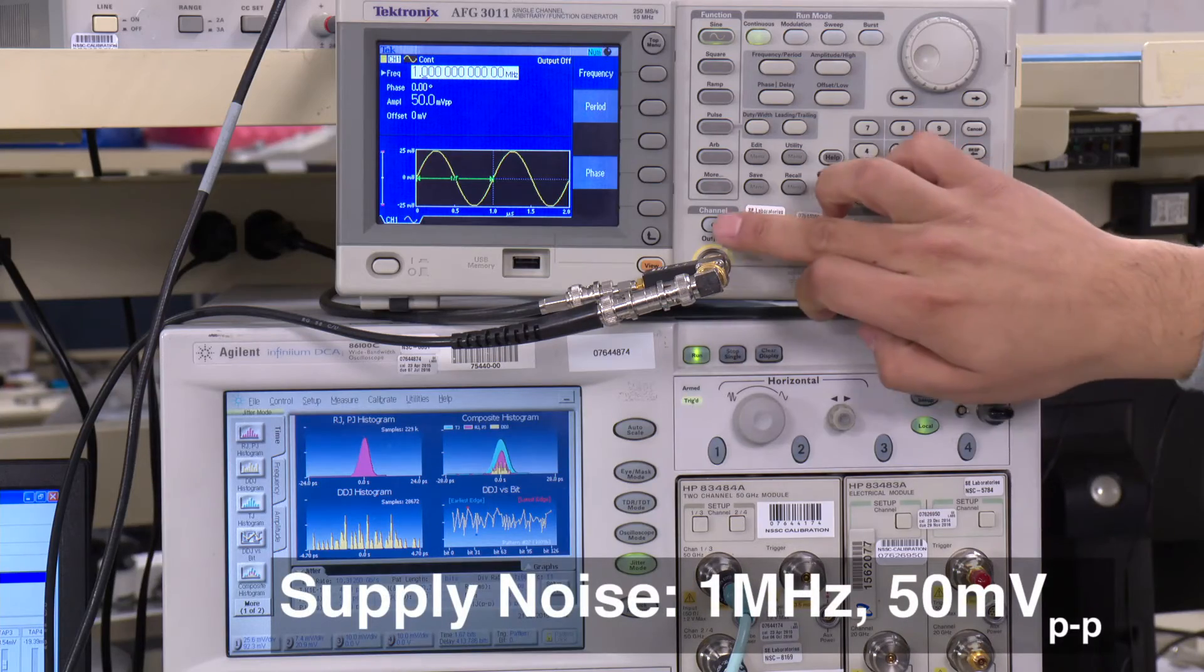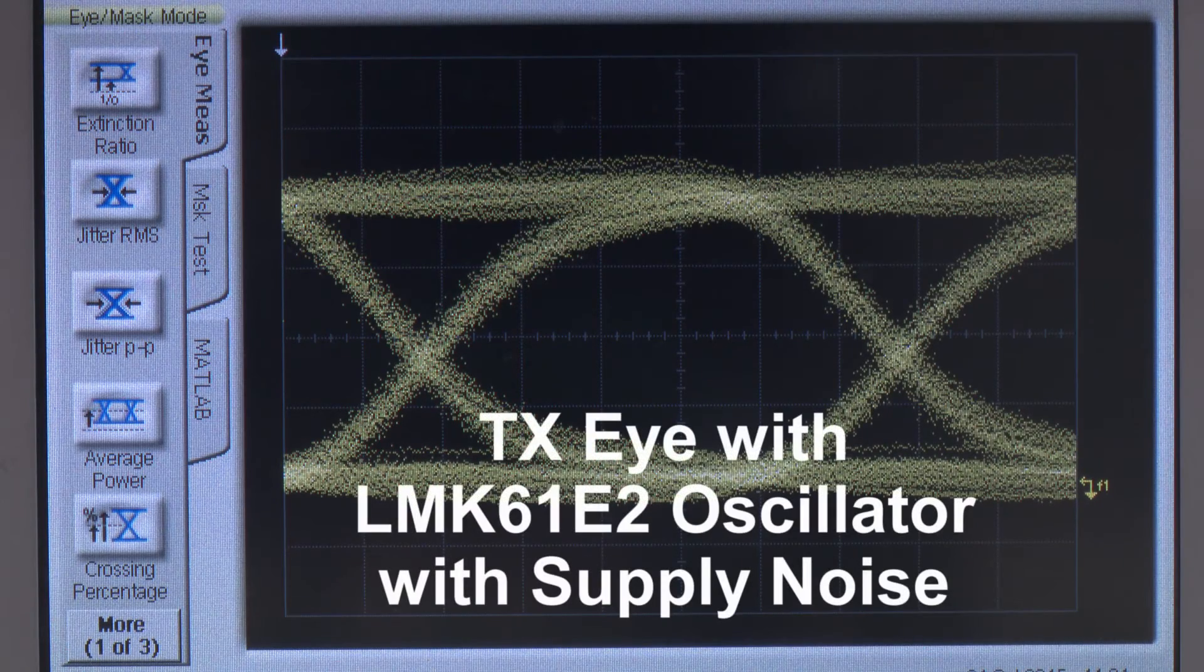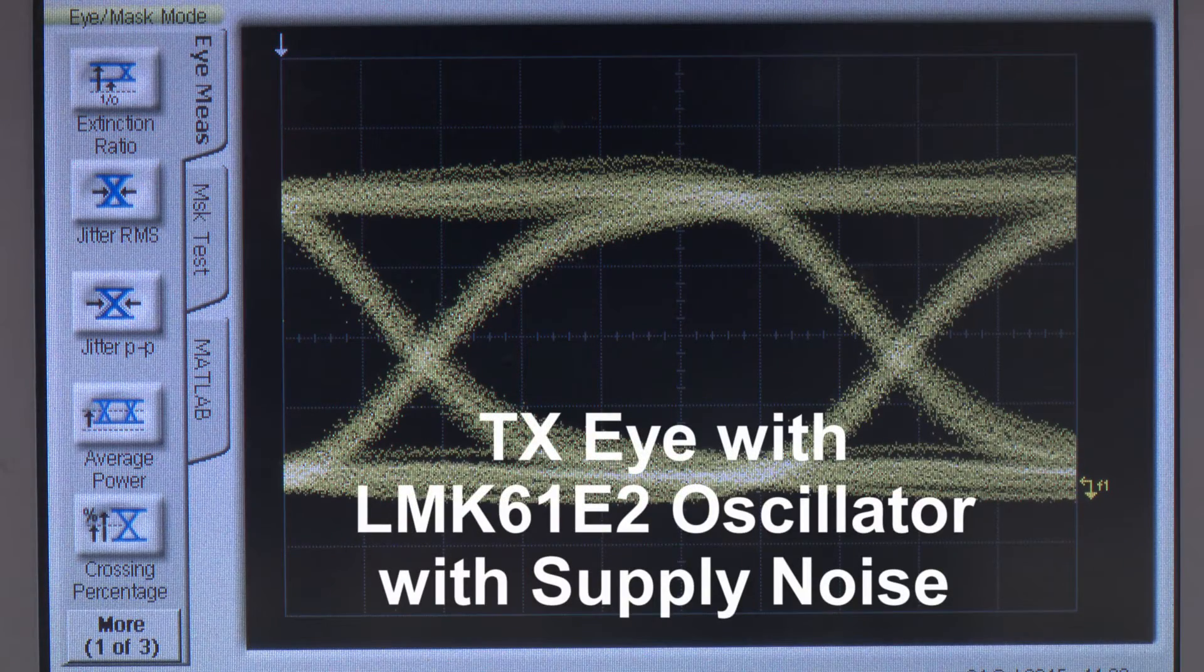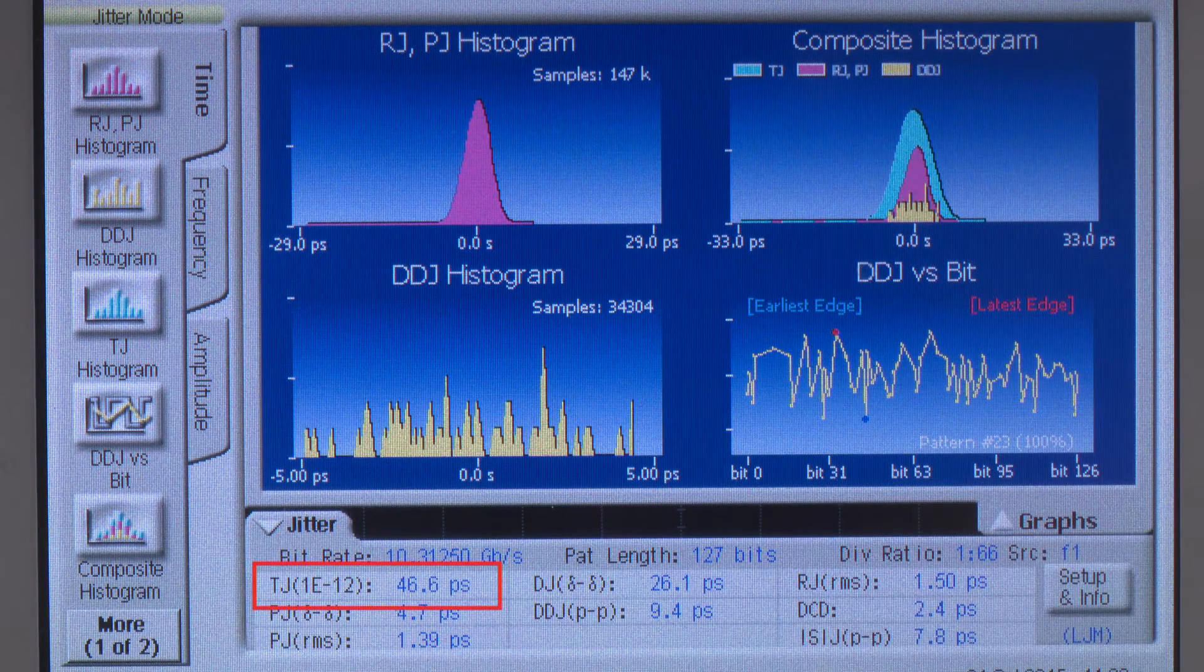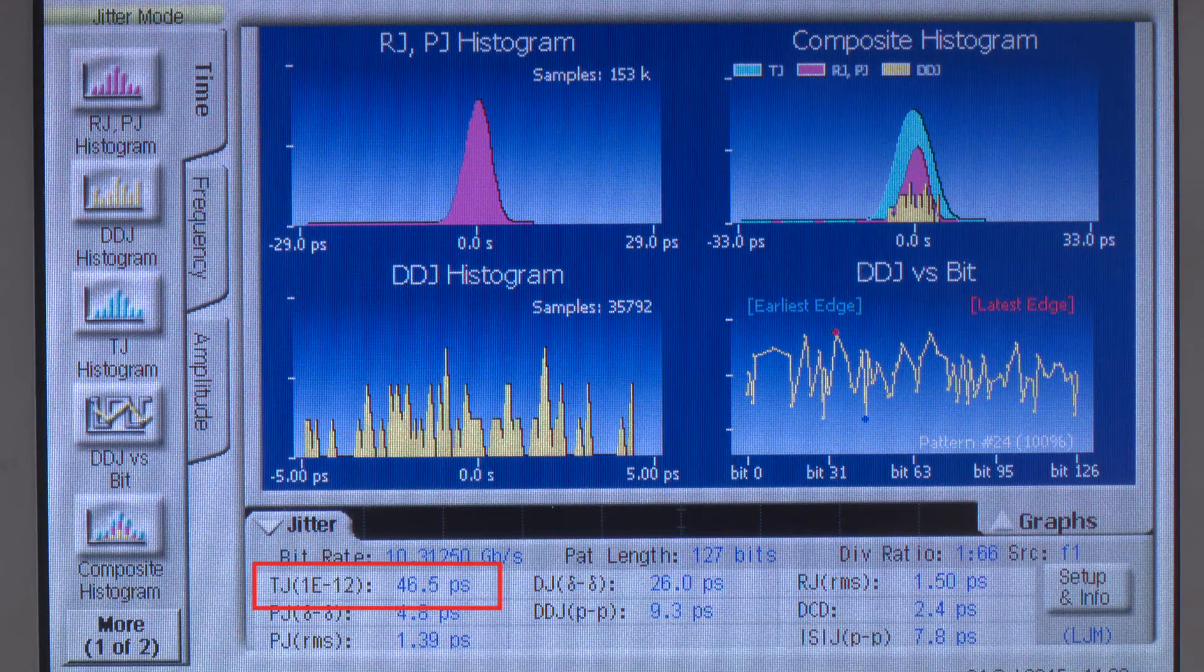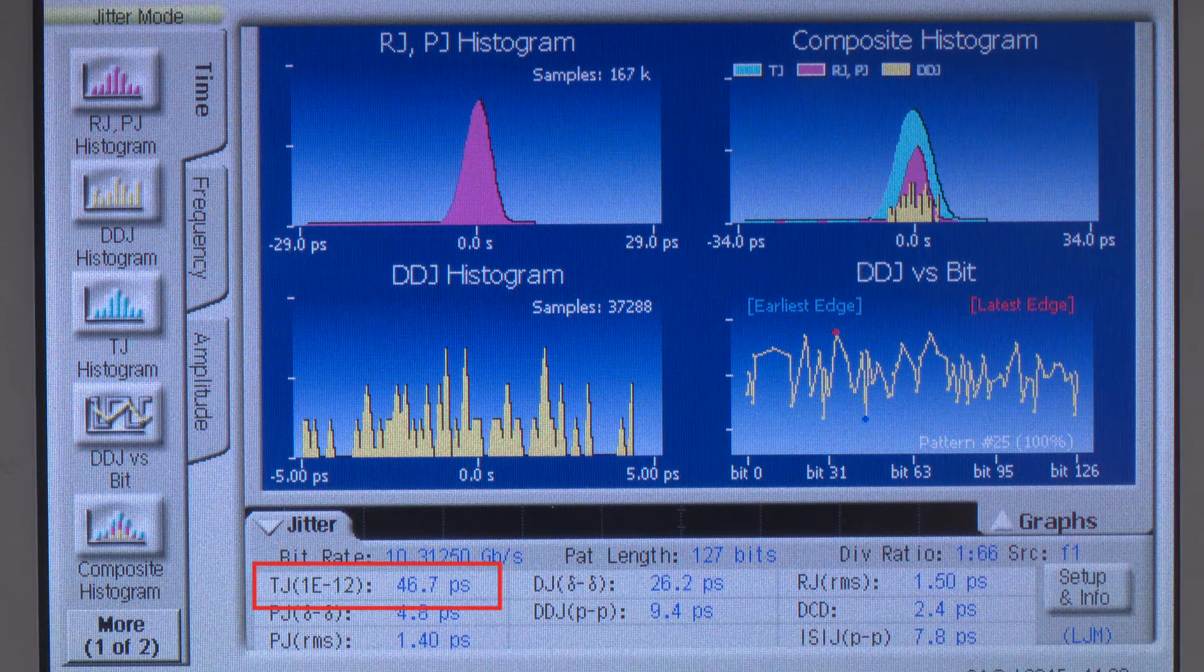Now, if we inject noise on the power supply, we can see the impact on the eye. Notice how there is little to no degradation on the eye. The superior PSRR of the LMK 6100 family shows little to no impact on total jitter on the TX eye.